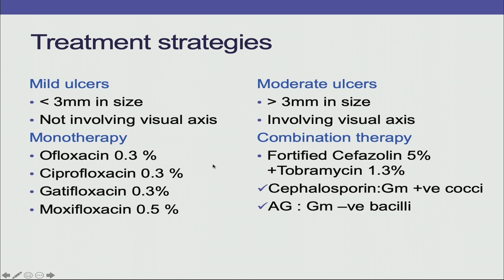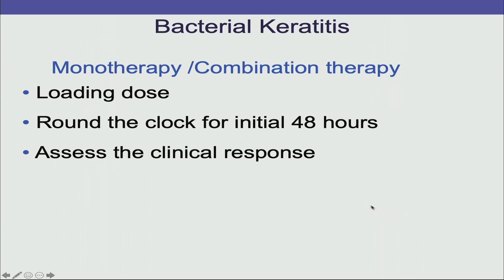In mild ulcers less than 3 mm in size and not involving the visual axis, monotherapy should be used — such as a 4th generation fluoroquinolone like gatifloxacin or moxifloxacin. In moderate ulcers more than 3 mm involving the visual axis, combination therapy is used with fortified cefazolin 5% and tobramycin 1.3% to cover gram-positive cocci and gram-negative bacilli. Loading dose is given round the clock for the initial 48 hours, then clinical response is assessed.